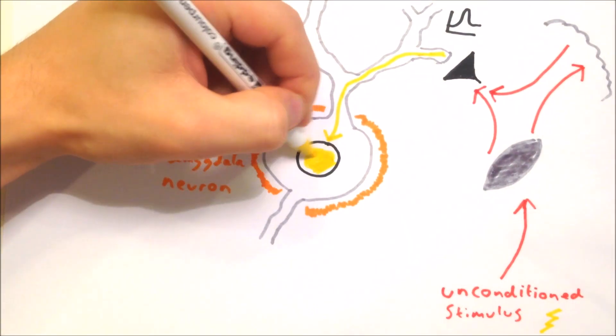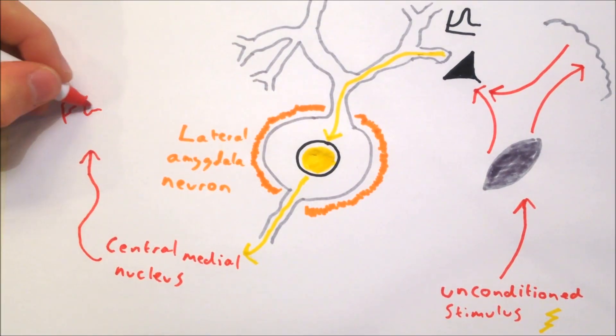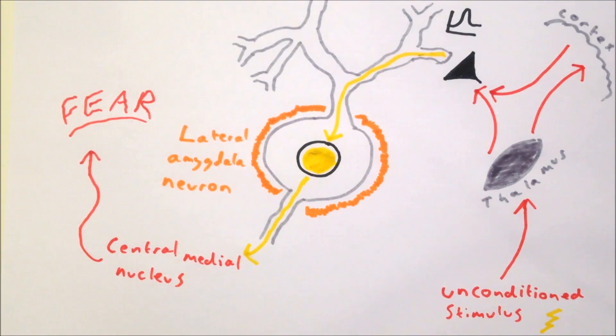The synaptic inputs from the unconditioned stimulus of the shock are strong enough to excite the lateral amygdala neurons, which in turn results in the activation of neurons in the central medial nucleus and produces a fear response.